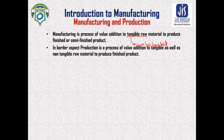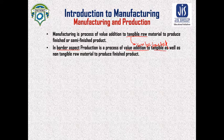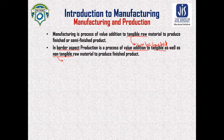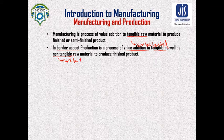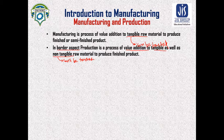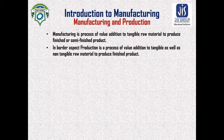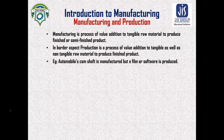In the case of production, it is the broader aspect of manufacturing. In production, the value addition is applied to tangible as well as non-tangible materials — non-tangible means cannot be touched. For example, an automobile camshaft can be manufactured, but a film or software can be produced.